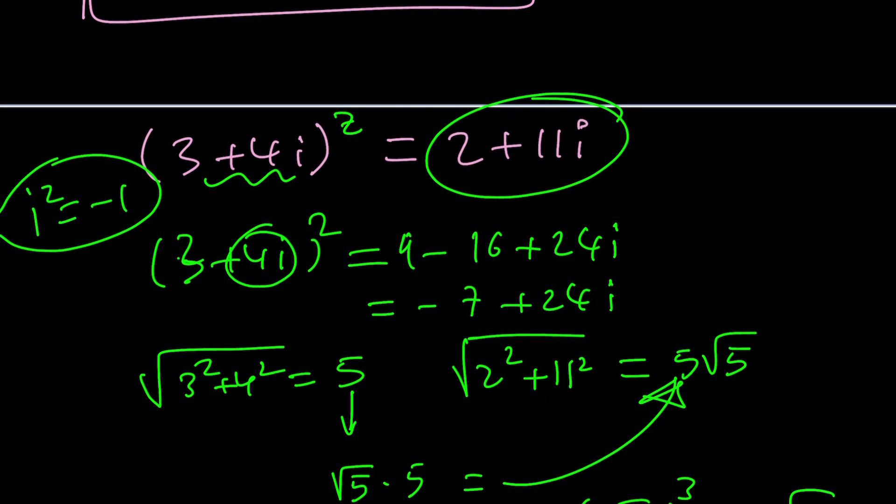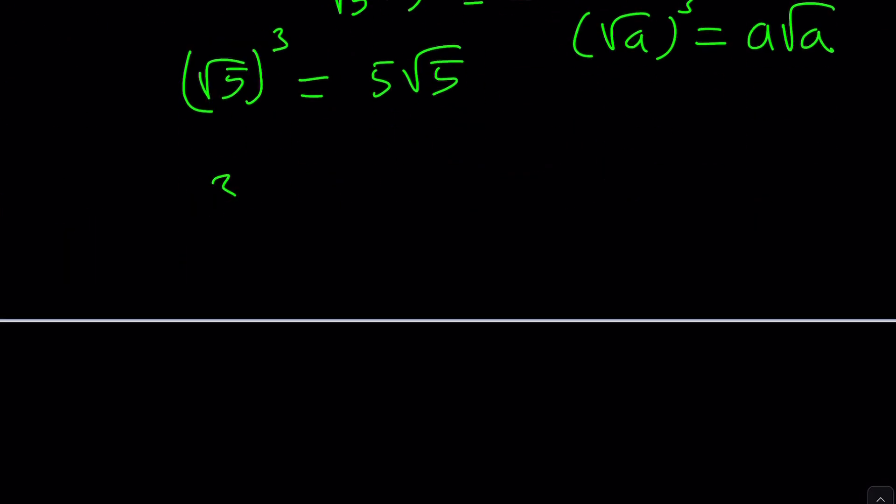So, what does that mean? It means that I can probably square root this number and then cube it. That should give me 2 plus 11i. That's interesting. Let's give it a try. Why not? It's all about experimentation, right?